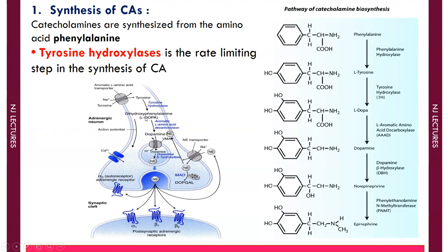The second step involves conversion of L-DOPA to dopamine by the cytosolic enzyme aromatic L-amino acid decarboxylase, or dopa decarboxylase. This is considered the final step in synthesis if dopamine is the target, as dopamine is an important neurotransmitter in the CNS. Dopamine synthesized in the cytoplasm is actively transported into the axon terminal, where it is hydroxylated to norepinephrine by dopamine beta-hydroxylase, present in synaptic vesicles. Norepinephrine then undergoes N-methylation to form epinephrine, catalyzed by phenylethanolamine N-methyltransferase (PNMT), present in the adrenal medulla.